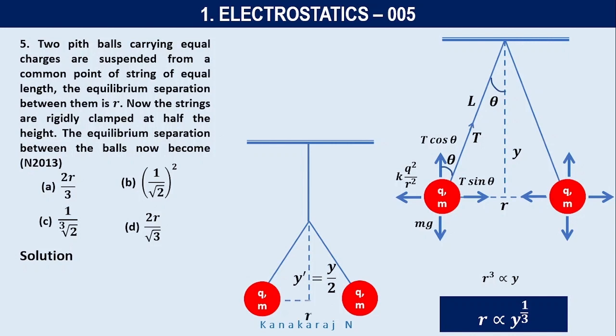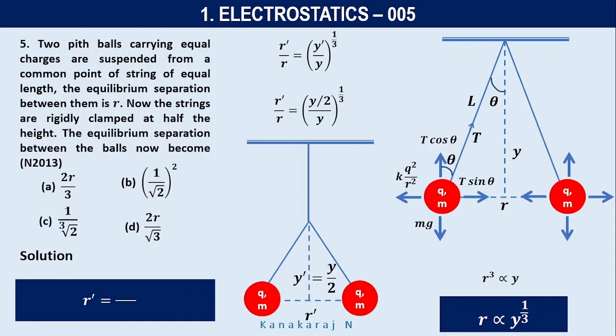So R prime by R equals Y prime by Y to the power 1 by 3. So we very well know it is given that Y prime is half the height Y by 2. So R prime by R equals Y by 2 divided by Y to the power 1 by 3. So Y, Y cancel. So the final equation R prime equals 1 by cube root of 2 times R. So the right option is option C, 1 by cube root of 2.